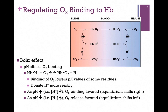The Bohr effect has to do with the effect of pH on oxygen binding to hemoglobin. We want to start with this very simple equilibrium. Here we have hemoglobin in its protonated state. It binds oxygen, and in the process, it will release H-plus or protons.